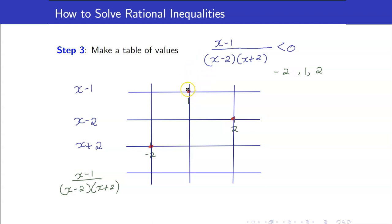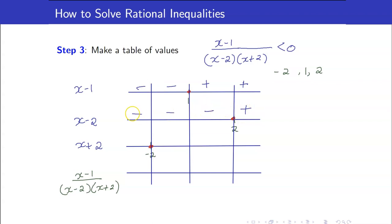Remember that you have a change of sign at the zeros. For the number line x minus 1, everything on the right of 1 is positive, everything on the left is negative. For x minus 2, everything to the right of 2 is positive, then negative. For x plus 2, everything to the right is positive, everything to the left of negative 2 is negative.